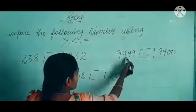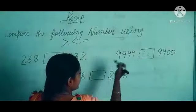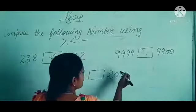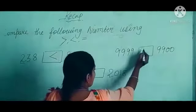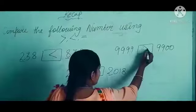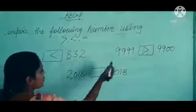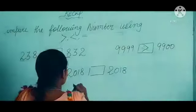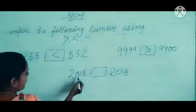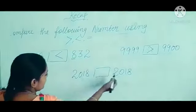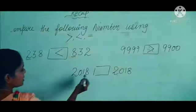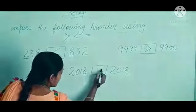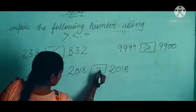Here is 9999 and here is 9999. So which one is greater? 9999 is greater — we will open the mouth toward the bigger one. Here is 2018 and here is 2018. These both are equal, so we will put the equal sign.